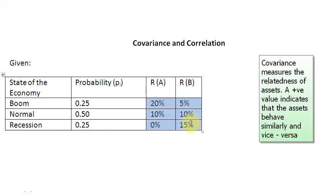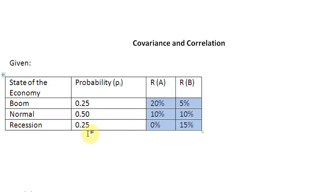Their return estimates are given to us here. These are the estimates assuming that the economy can enter into three possible states: either boom, recession, or something in between — a normal time period. The probability of each of these states is also given to us: 25% chance of a boom, 50% chance of a normal time period, and a 25% probability for a recessionary phase.